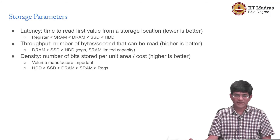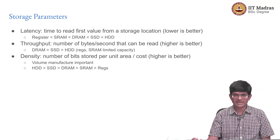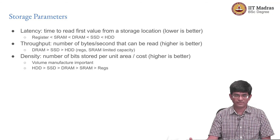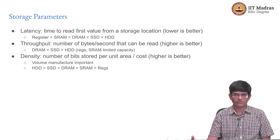Then comes the density — how many bits can be stored per unit area, or more importantly per unit cost, because area can be misleading. You might say that DRAM has extremely high density because it is taking a fraction of a micron to store a bit, but creating large DRAMs that can store hundreds of gigabytes or even terabytes of data is going to be very expensive. So from that point of view, volume manufacturing becomes very important, and we see that HDDs are the most cost-efficient, followed by SSDs, followed by DRAM, followed by SRAM, followed by registers — which in some ways also explains why the number of bits stored in each of these follows this trajectory.